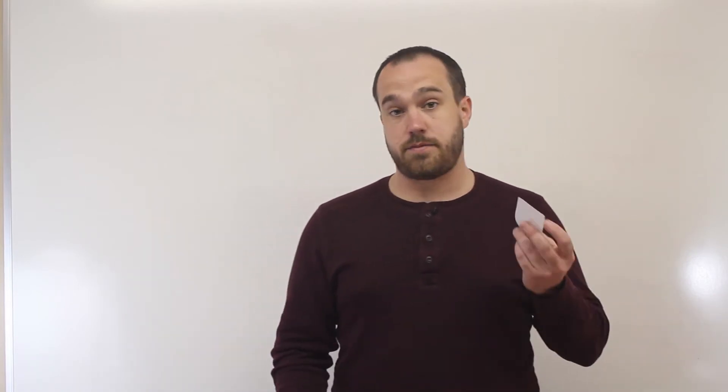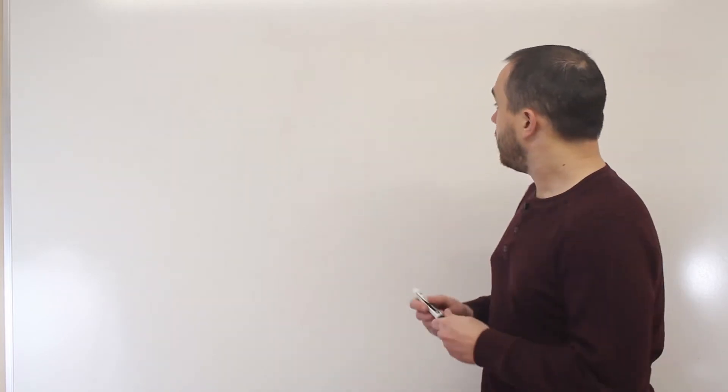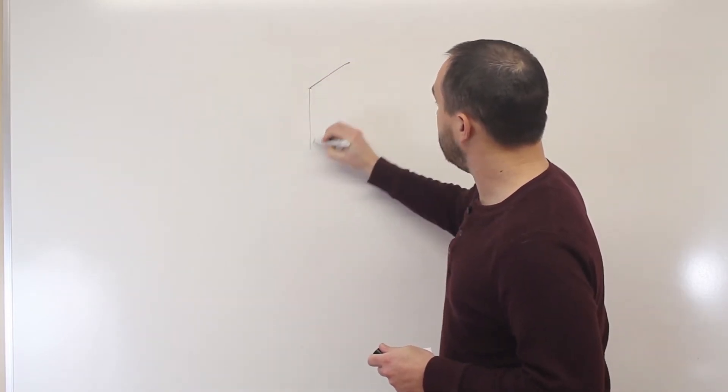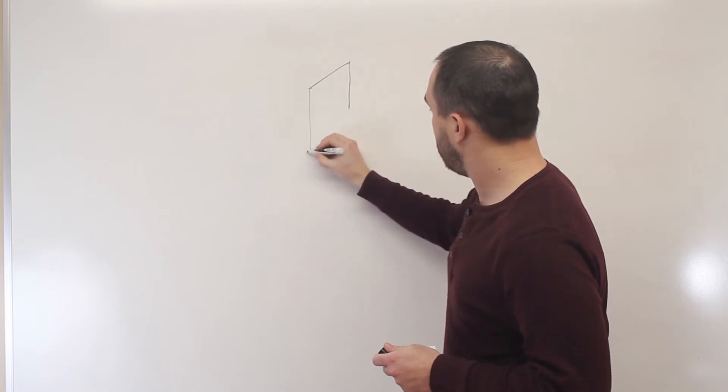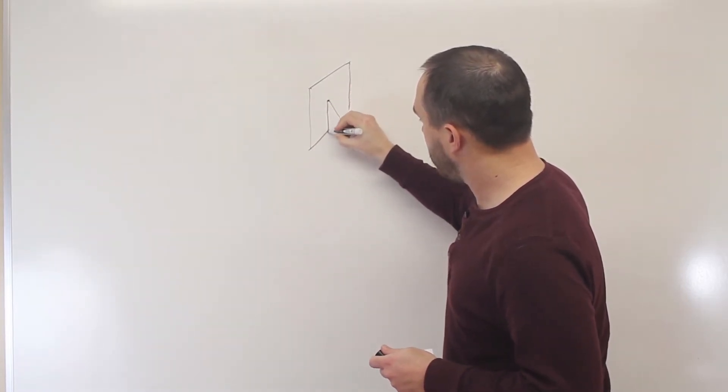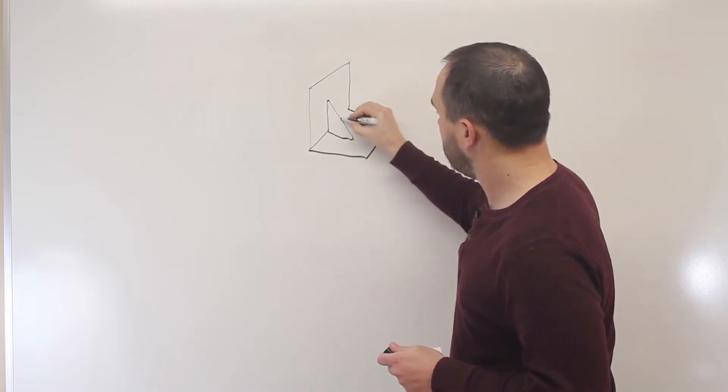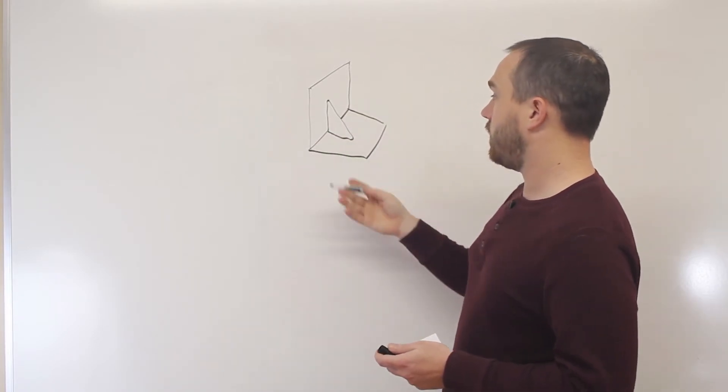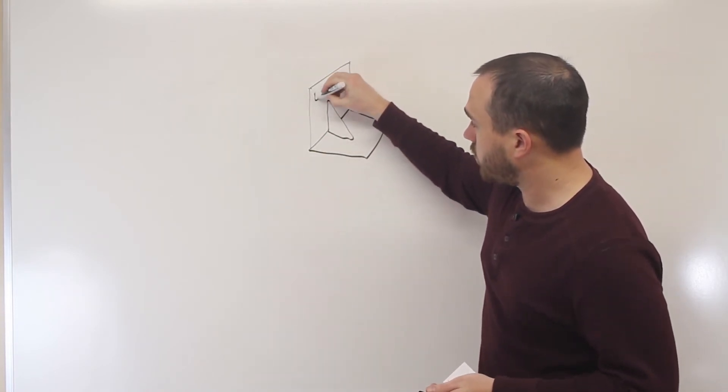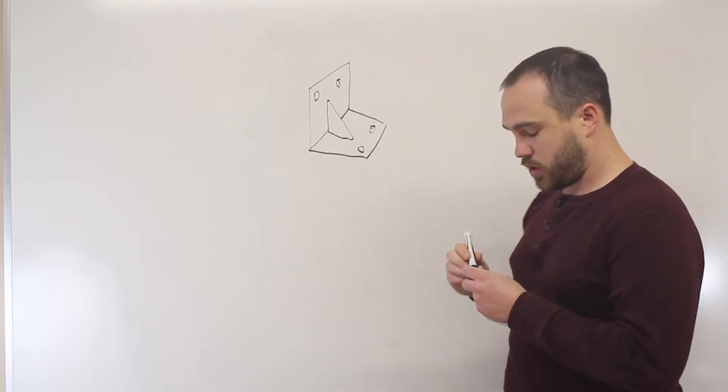So let's say I wanted to make an L-bracket that looks like this and has a gusset to give it a little extra strength. This is a very common L-bracket. I'm sure you've seen that all over the place. It looks pretty simple.